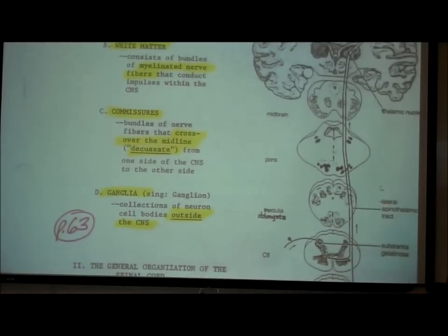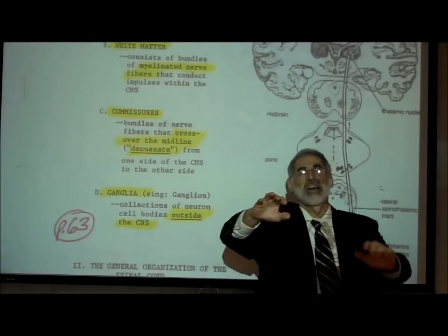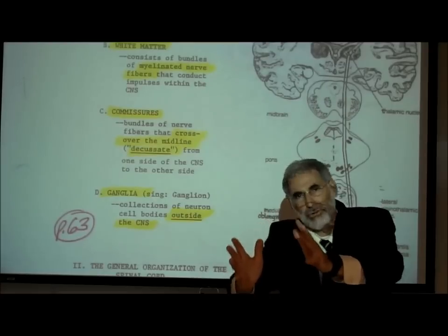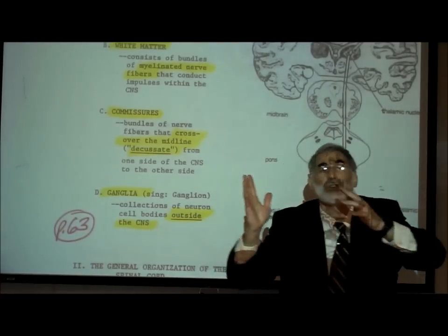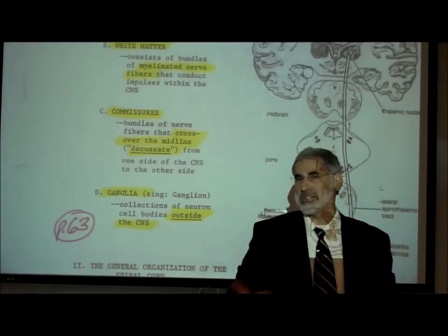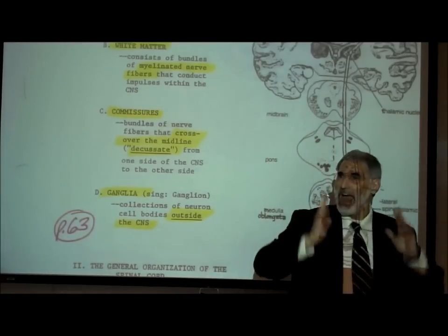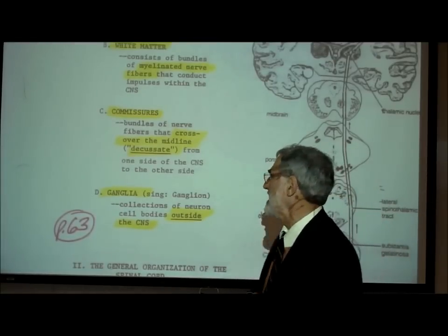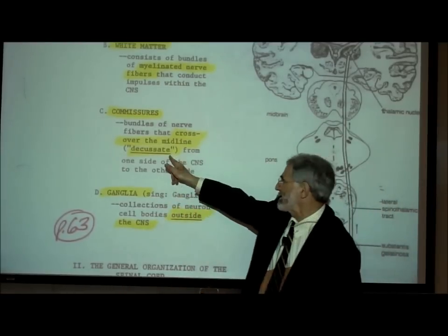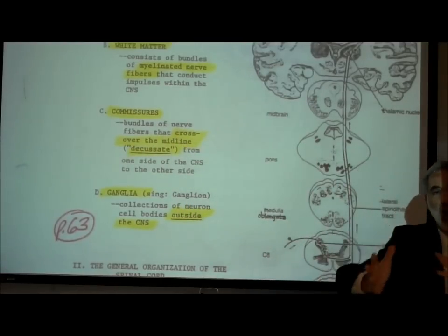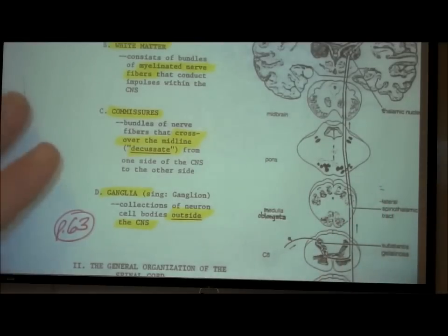A third term: commissures. What is a commissure? A commissure refers to a bundle of nerve fibers that cross from the right side of your central nervous system to the left, or from the left to the right. So they connect the two halves of your central nervous system together, allowing communication between them. The fancy term for crossing is decussate — a commissure is where nerve fibers decussate.